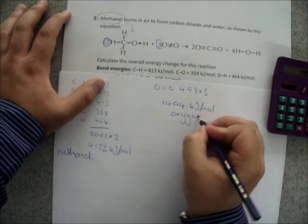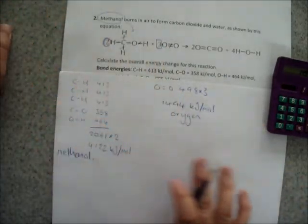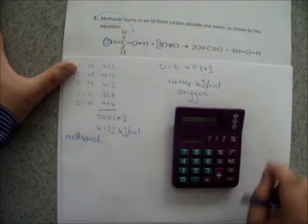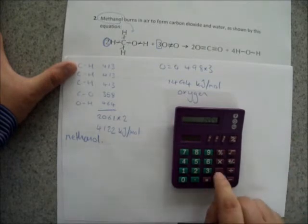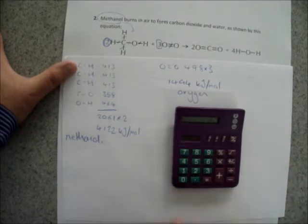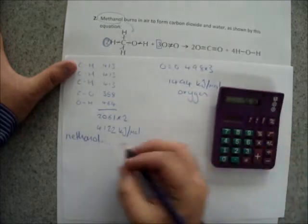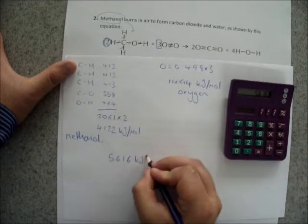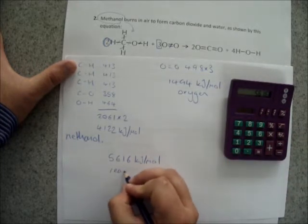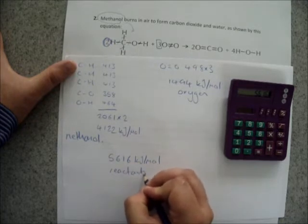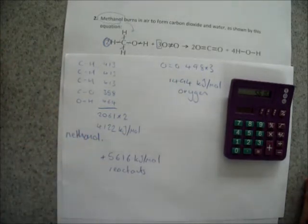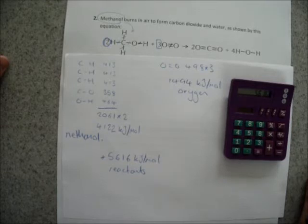Now, to find the overall bond energy, or the total bond energy, for the reactants in this particular reaction, then you add these two numbers together. So we've got 1494 kilojoules per mole for oxygen, plus 4122 kilojoules per mole for the methanol. And that leaves us with 5616 kilojoules per mole. And that is all of the reactants. And therefore, that is the amount of energy. This is a positive number. That's the amount of energy that must be added to the chemical store in order to break all of the bonds of the reactants.